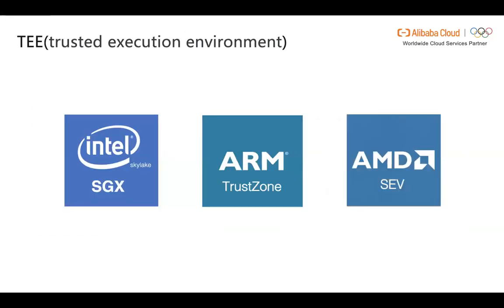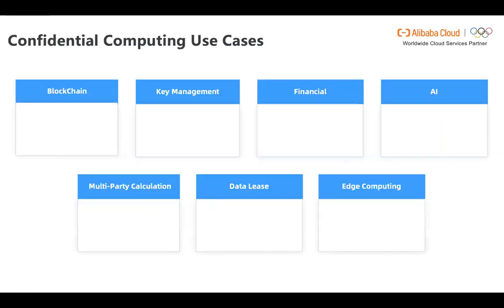Building an Enclave relies on the Trusted Execution Environment in hardware. Each platform may have a different TEE solution. For example, Intel has SGX on Skylake platform, ARM has TrustZone, and AMD has its own TEE solution. Confidential computing has many use cases, such as blockchain, key management, financial services, AI, multi-party computation, data sharing, and edge computing.